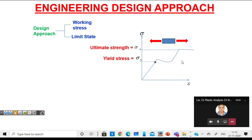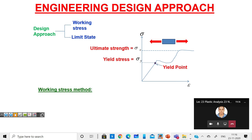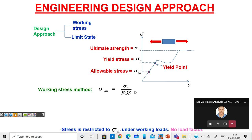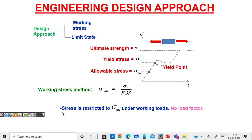This is the stress versus strain diagram. In the working stress method, we define an allowable stress as a fraction of the yield stress — allowable stress equals yield stress divided by a factor of safety. For example, in the case of steel, the allowable stress is 60% of the yield stress. We assume that under all working conditions, stress will remain under the allowable stress limit, meaning the structure always remains in the elastic zone.